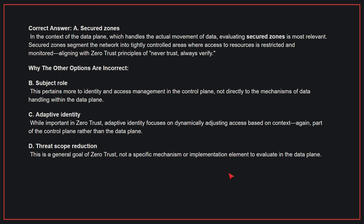Why the other options are incorrect: B. Subject role pertains more to identity and access management in the control plane, not directly to the mechanisms of data handling within the data plane. C. Adaptive identity focuses on dynamically adjusting access based on context — again, part of the control plane rather than the data plane. D. Threat scope reduction is a general goal of zero trust, not a specific mechanism or implementation element to evaluate in the data plane. Therefore, the correct answer is A.